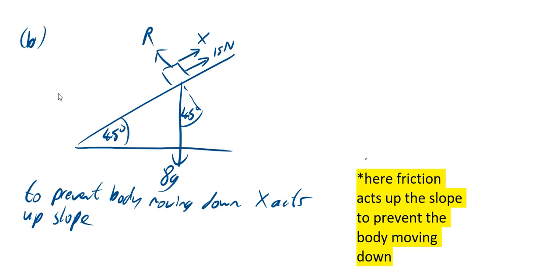What you're going to have, we're going to resolve parallel to the plane, and we're going to go up the plane because our X is up the plane to make life easier. X plus 15 must be greater than 8G sine 45. X is going up the plane, the 15 is going up the plane, and the 8G sine 45 is a component of the weight which is acting down the slope.